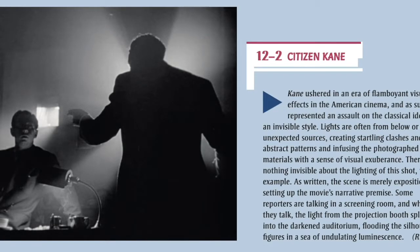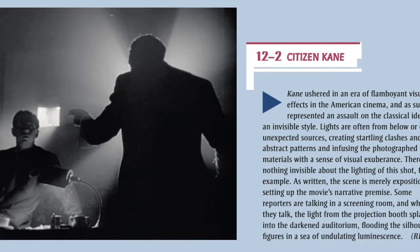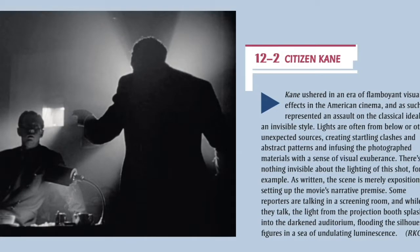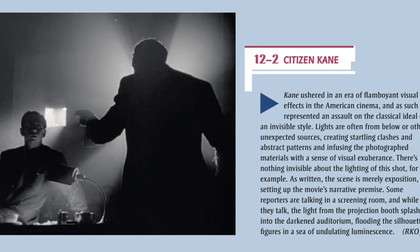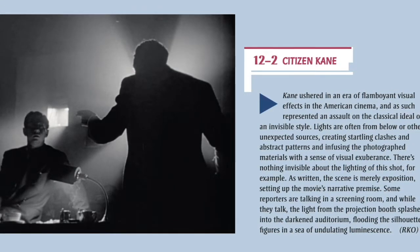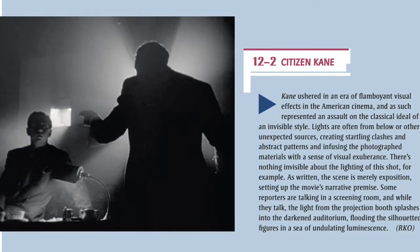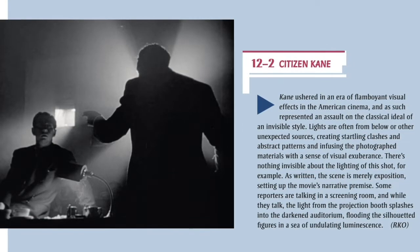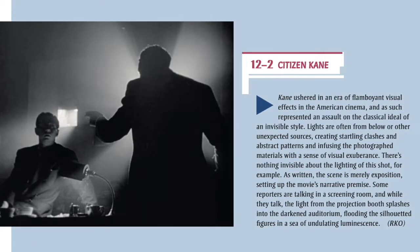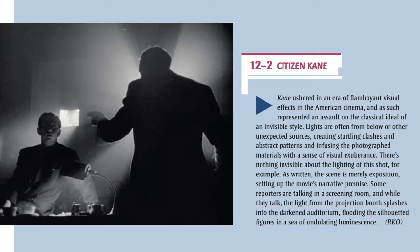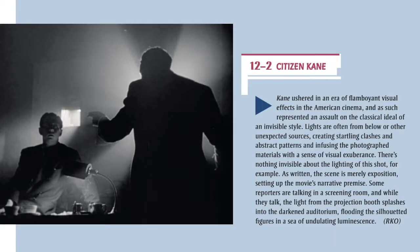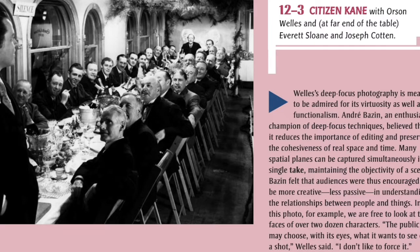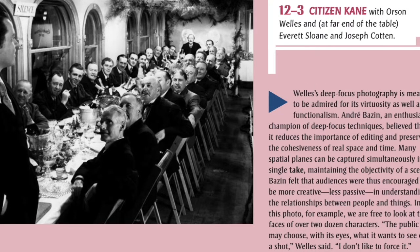12-2: Citizen Kane ushered in an era of flamboyant visual effects in the American cinema, representing an assault on the classical ideal of an invisible style. Lights are often from below or other unexpected sources, creating startling clashes and abstract patterns and infusing the photographed materials with a sense of visual exuberance. There's nothing invisible about the lighting of this shot. As written, the scene is merely exposition, setting up the movie's narrative premise. Some reporters are talking in a screening room, and while they talk, the light from the projection booth splashes into the darkened auditorium, flooding the silhouetted figures in a sea of undulating luminescence.